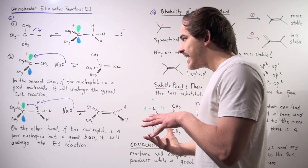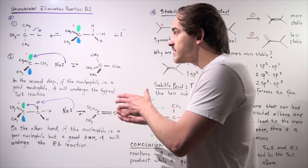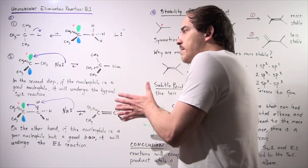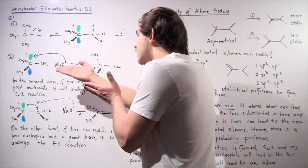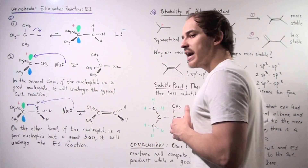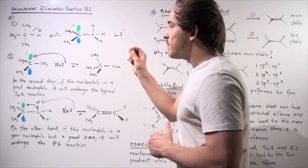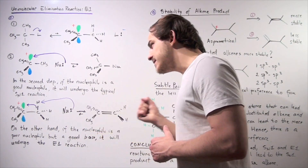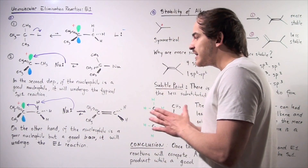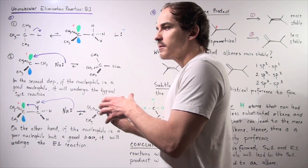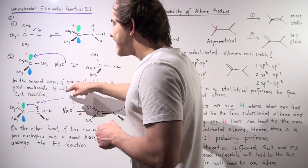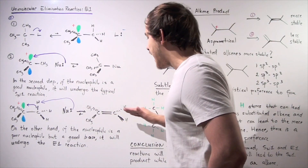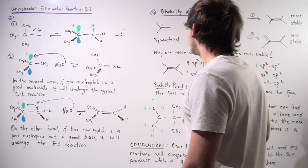So once again: if the nucleophile is a better nucleophile than it is a base, we have our typical SN1 reaction. But if its basicity is higher than its nucleophilicity — meaning it's a better base — it will abstract the proton and form our alkene product.